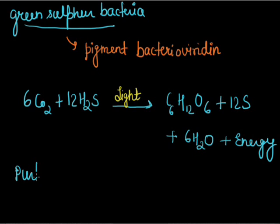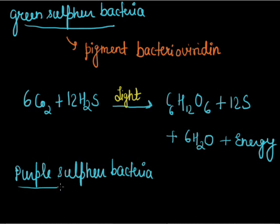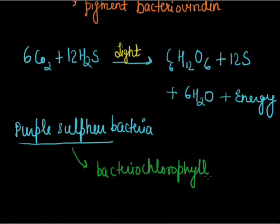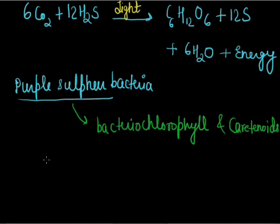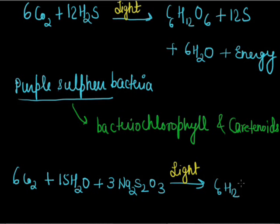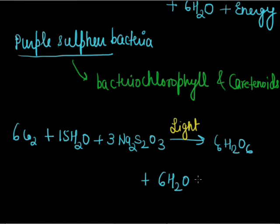Another type is purple sulphur bacteria. Purple sulphur bacteria contain the pigments bacteriochlorophyll and carotenoids. These bacteria utilize inorganic sulphur compounds, selenium compounds, or molecular hydrogen. The reaction is: 6 CO₂ + 15 H₂O + 3 molecules of sodium thiosulphate, with light energy, forms glucose + 6 H₂O + 6 NaHSO₄ + energy.